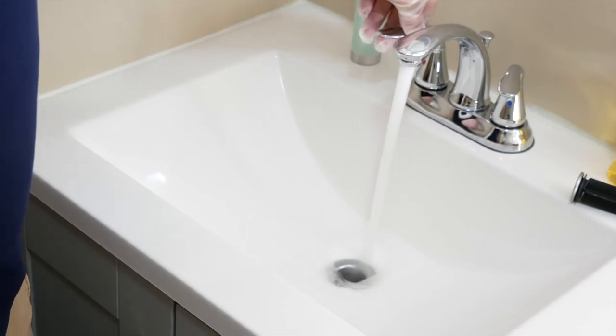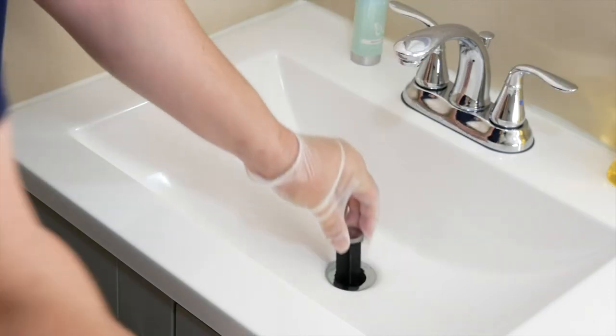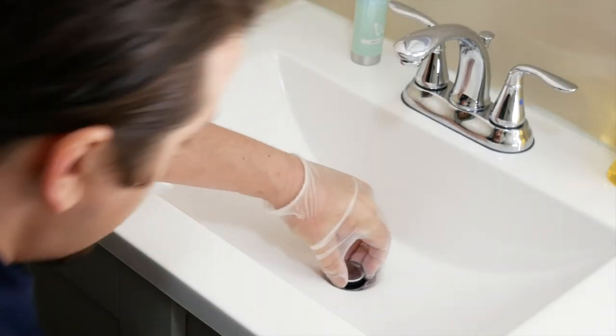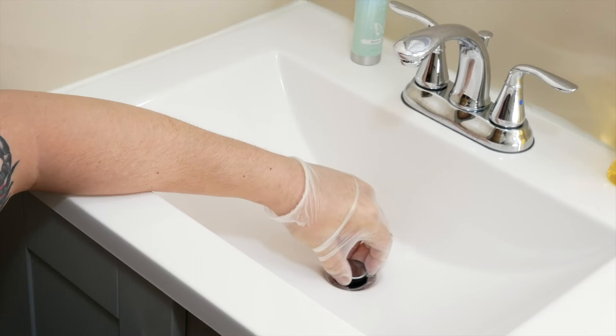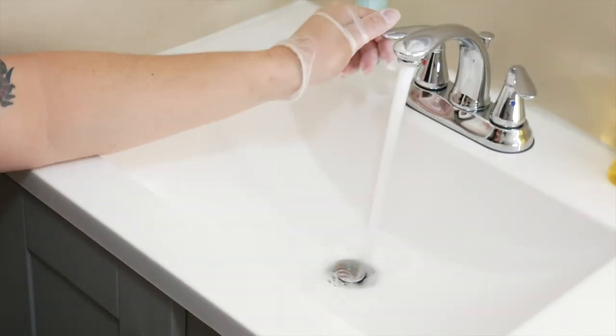Once the drain is successfully unclogged, replace the overflow plate or stopper and run some more water down the drain. You have successfully unclogged a drain using your cheap and handy plastic drain snake tool.